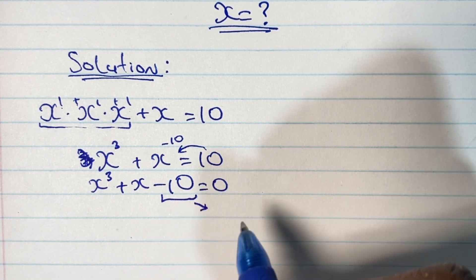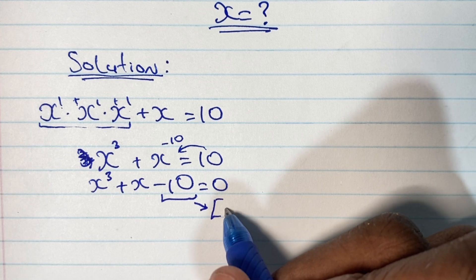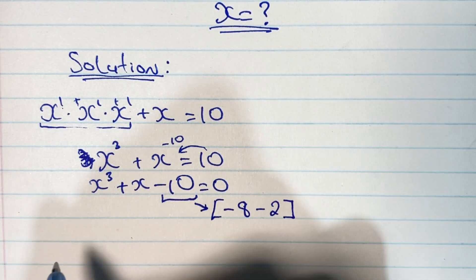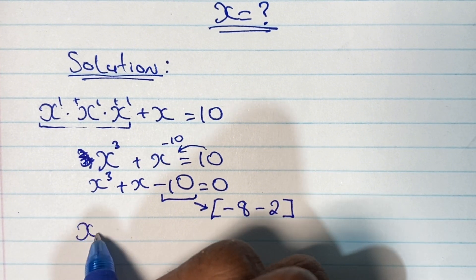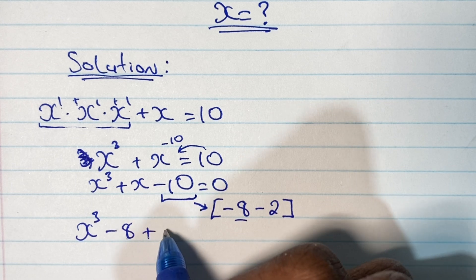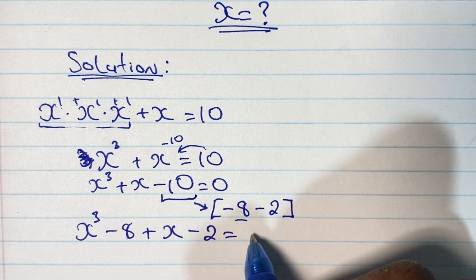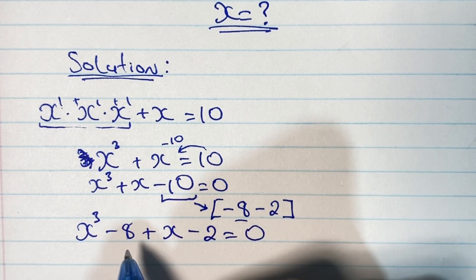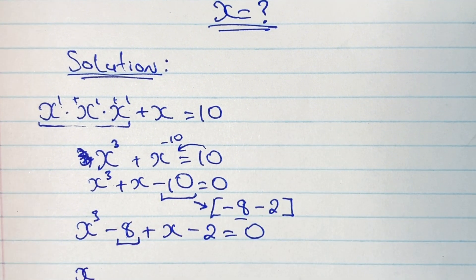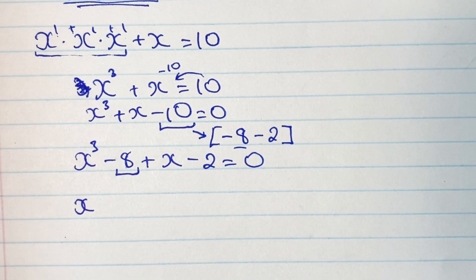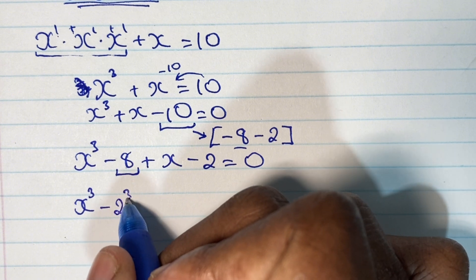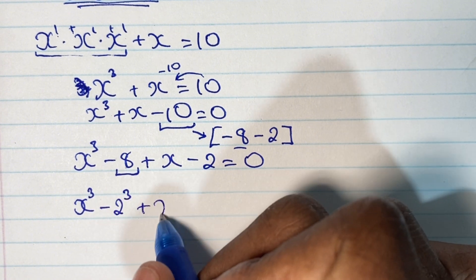Now looking at our number term, negative 10 can be written as negative 8 minus 2. We substitute this into our equation, giving us x to the power of 3 minus 8 plus x minus 2 is equal to 0. This makes our equation easier to solve as we can take 8, which is a cubic number, and rewrite it as 2 cubed: x cubed minus 2 cubed plus x minus 2 is equal to 0.